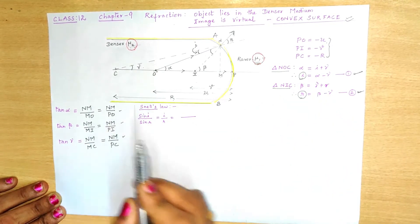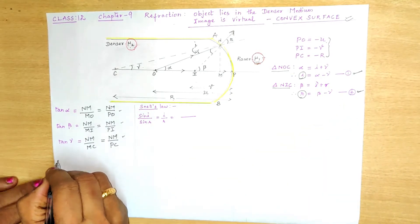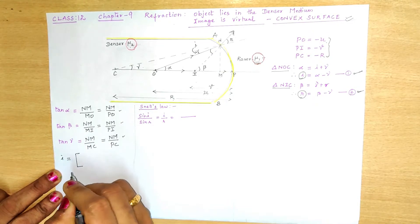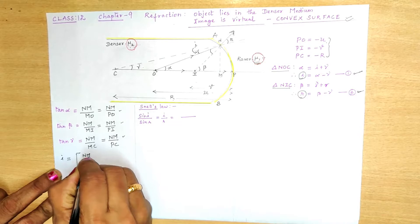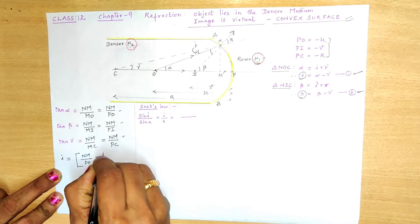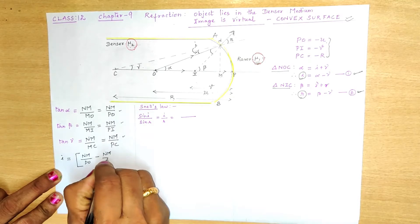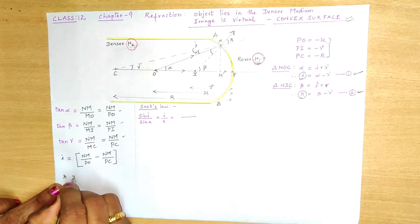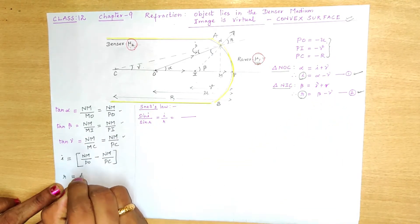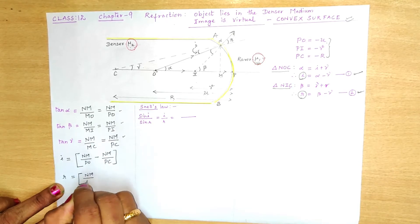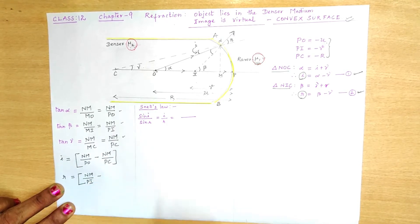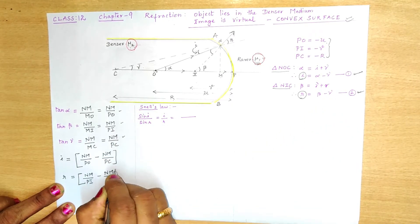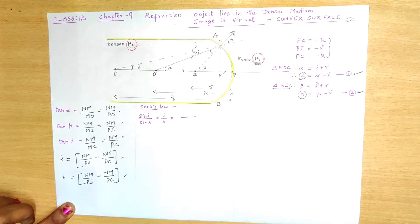Now let us substitute these values into equations 1 and 2 and rearrange. For I: I = alpha − gamma = NM/PO − NM/PC. For R: R = beta − gamma = NM/PI − NM/PC. The values for I and R are now ready.